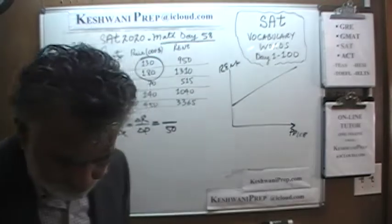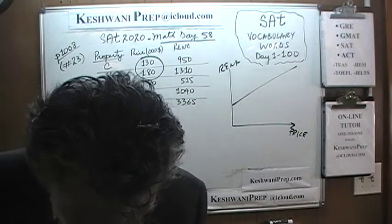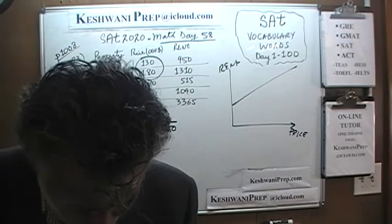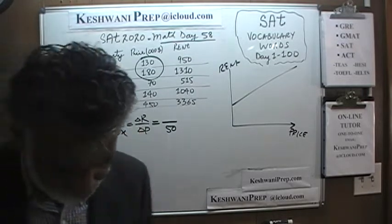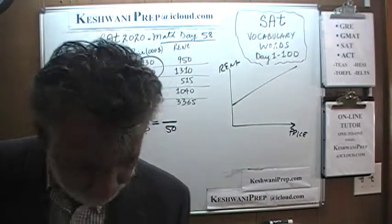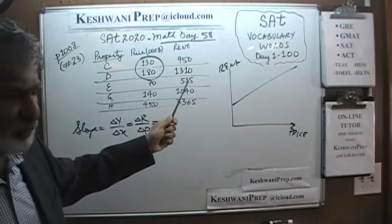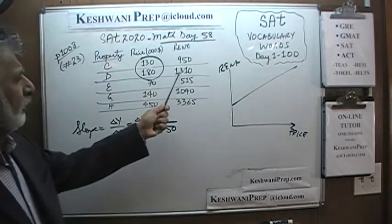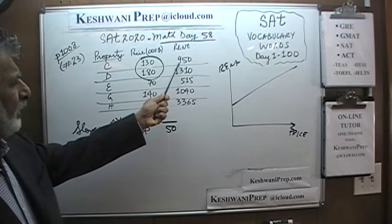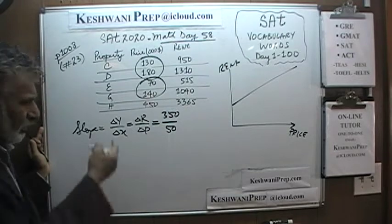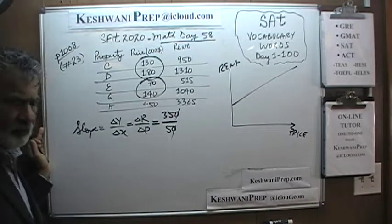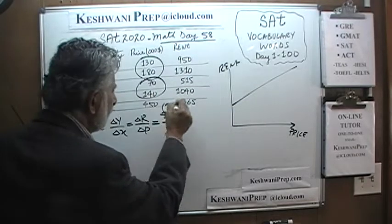I actually used different points in my notes — 70 and 40 — but let's finish this up. The change in rent between 1300 and 950 is 350. So the zeros go out and 75 divided by 35 gives us a slope of 7. Once you recognize the slope is 7, we already know the answer is either C or D.